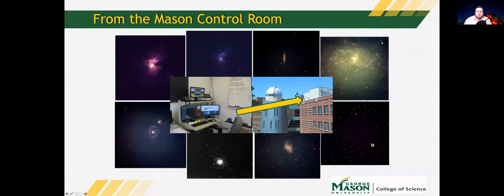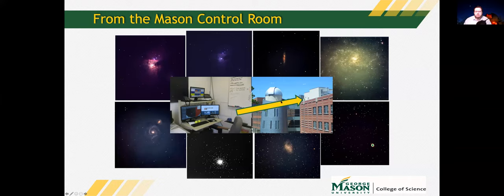Here's a picture of our observatory. We're located on top of Research Hall on the Fairfax Virginia campus. We have a dome with a telescope on top of a gray structure on the fourth story roof, and to the right is our control room where we operate the campus telescope. Around the perimeter are images obtained with our telescope by students.